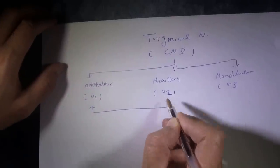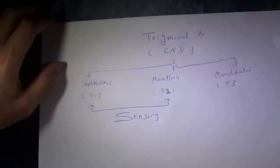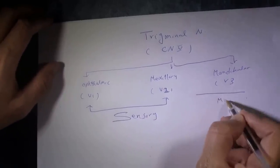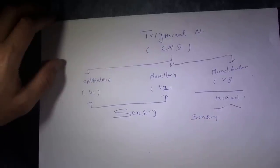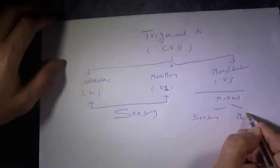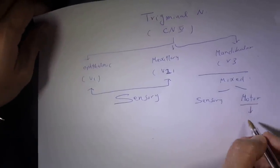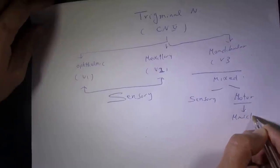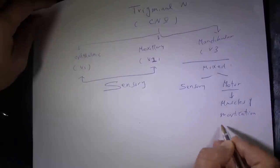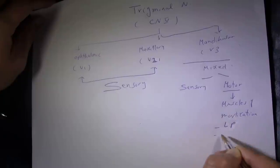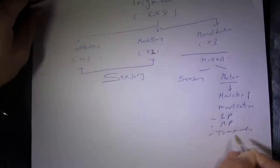Keep in mind that ophthalmic and maxillary are both completely sensory. The mandibular division is mixed — it has sensory branches and also motor branches. The motor branches primarily supply the four muscles of mastication: lateral pterygoid, medial pterygoid, temporalis, and masseter.